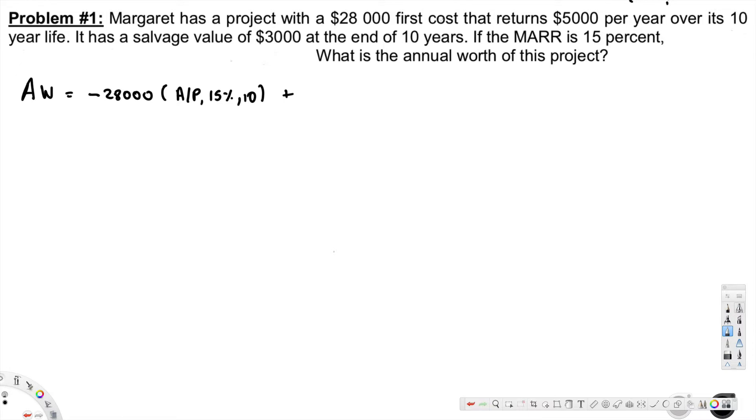And also we have first cost that returns $5,000 per year, $5,000 here, plus it has a salvage value of $3,000 at the end of 10 years. $3,000, it also A/F, 15 percent for 10 years.